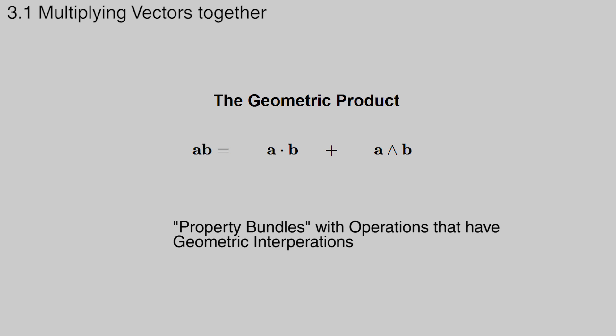Basically, by multiplying two vectors together, we compute useful properties about them, such as the length of their projection onto each other, or the cosine of the angle, and the plane they form together, and the sine of the angle. We keep these bundled together via the plus sign. The geometric product also gives these property bundles operations that can be applied to them. And these operations have geometric interpretations, for example, rotating and reflecting vectors.